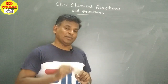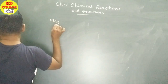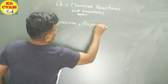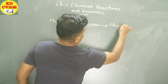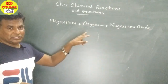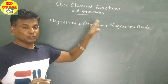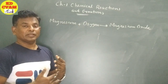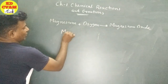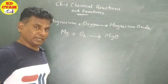Today we will understand how to balance chemical equations. Now look at this: magnesium plus oxygen gives magnesium oxide. This is a word equation because no formula is used. When we use chemical formulas, it becomes: Mg plus O2 gives MgO. Magnesium plus oxygen gives magnesium oxide.